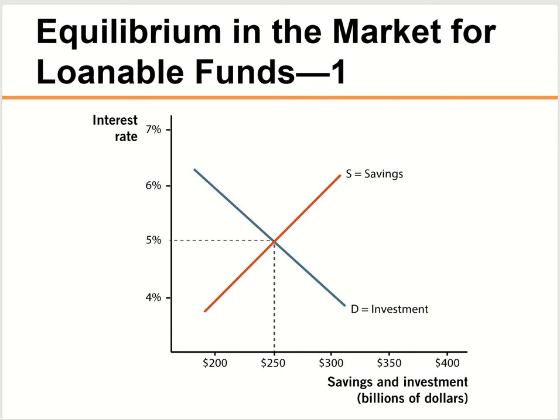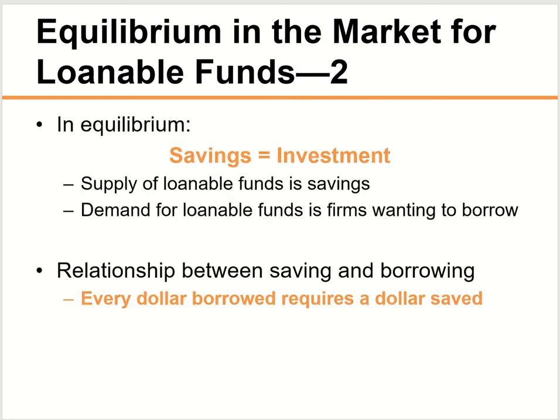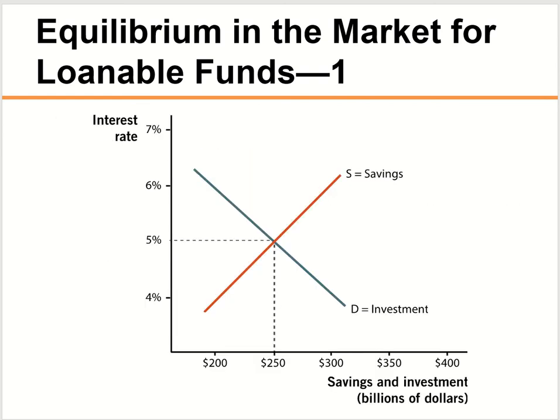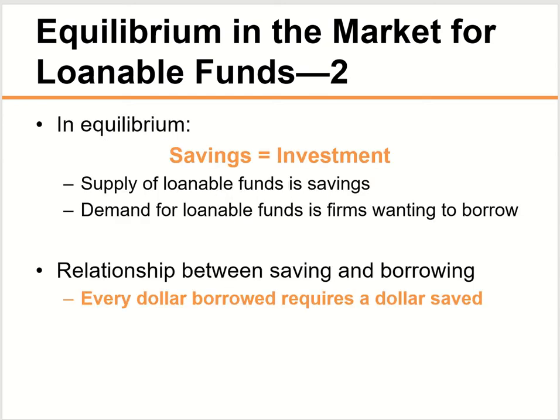When you put supply and demand together, at equilibrium — the intersection — you determine what the interest rate is in the economy and what the quantity of money is in the loanable fund market. At equilibrium, there's no surplus and no shortage. How much money is saved equals how much money is invested — every dollar borrowed comes from every dollar saved.